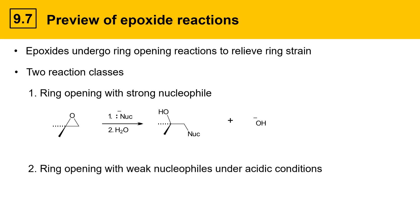The other class are ring openings with weak nucleophiles under acidic conditions. Here's an example of that same epoxide but reacting with a weak nucleophile. The weak nucleophile is shown here with a lone pair but no negative charge and carrying a hydrogen.